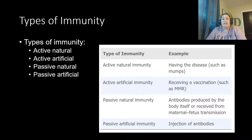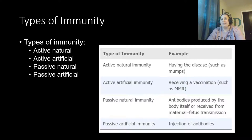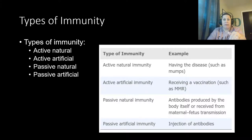Passive natural immunity is when antibodies are produced by the body itself or received via maternal-fetal transmission. The mother's naturally-made antibodies are passed to the baby across the placenta or through breastfeeding, giving the baby temporary protection — but only for a short time because the baby isn't actually making them. No memory cells are created in either type of passive immunity, so no own antibodies are made.